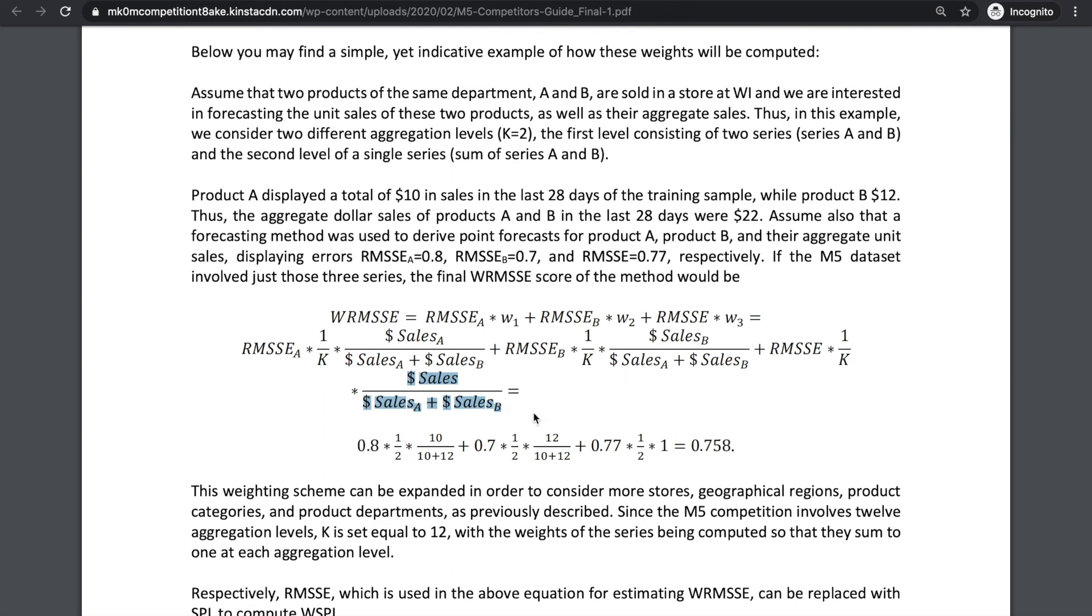Then because SAB is the only series in its hierarchy, we'll give it a weight of one for now. Then we want to make sure the sum of weights over all the hierarchies is one. So we divide everything by the number of hierarchies, denoted by this one over k in front of every weight.